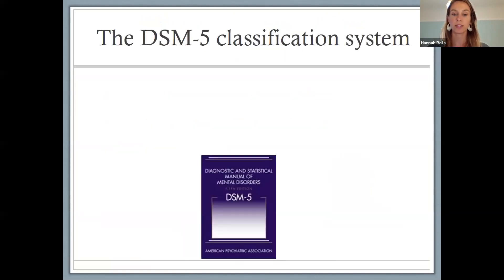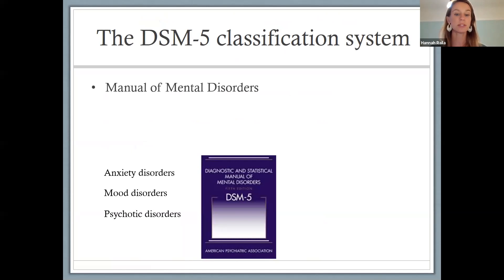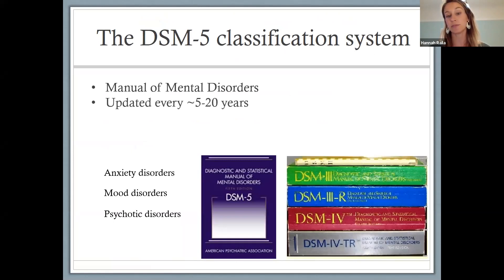The way that psychology as a field classifies different mental illnesses is through the DSM-5. The DSM is the Diagnostic and Statistical Manual of Mental Disorders — often referred to as the bible of psychiatry or psychology. It lumps disorders into different categories: anxiety disorders, mood disorders, psychotic disorders, and many more — 500-plus pages of different disorders. It gets updated every five to 20 years. With each version it's getting bigger and bigger; we're generally adding things rather than taking them away.